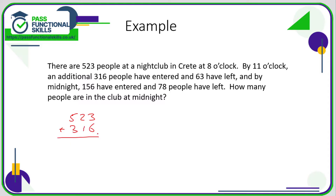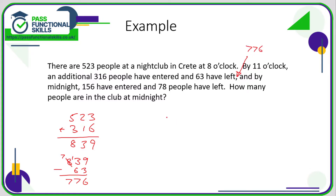That comes to a total of 839: 2 plus 1 is 3, 5 plus 3 is 8. Now we need to take away the 63 from that. 9 minus 3 is 6; 3 minus 6 can't be done, so 8 becomes 7, 3 becomes 13; 13 minus 6 is 7; 7 minus nothing is 7. So by 11 o'clock there were 776 people.